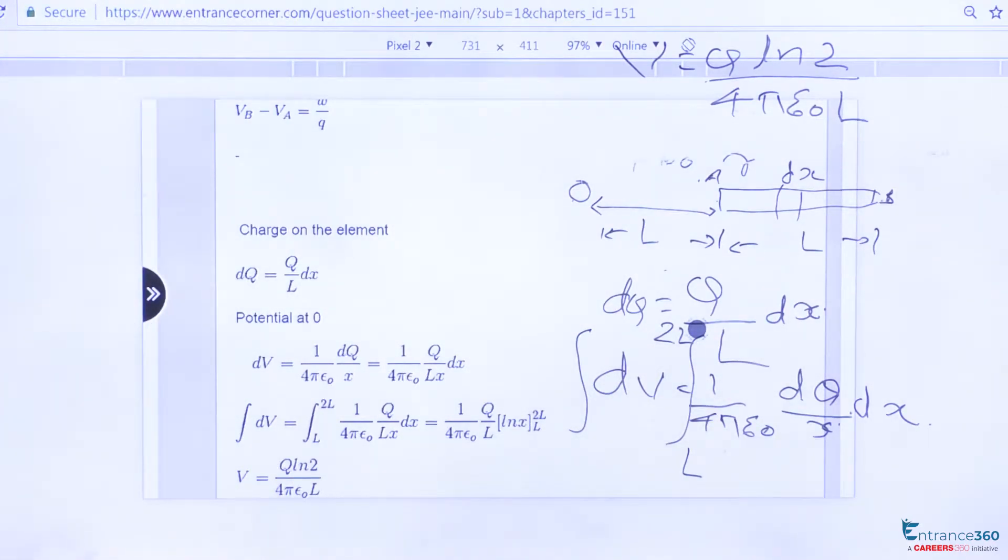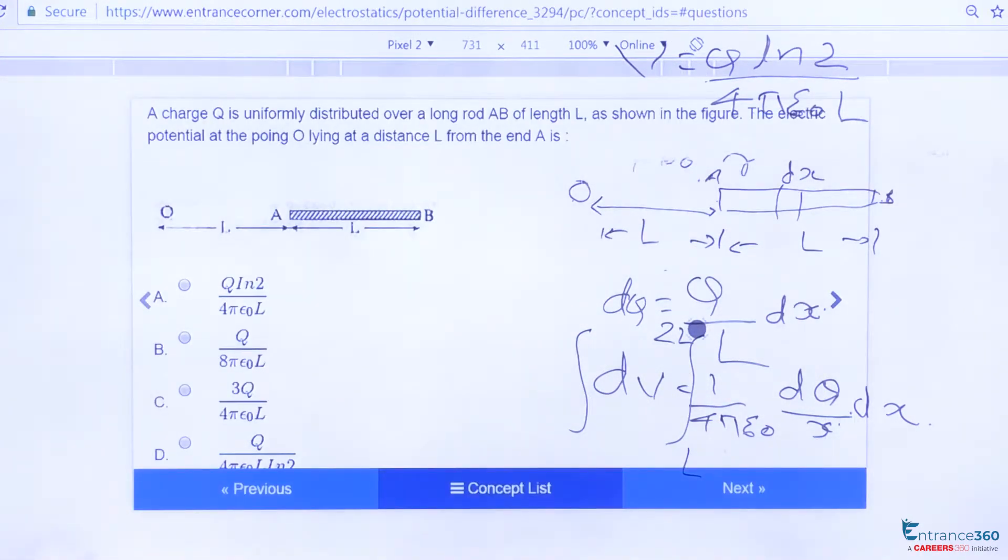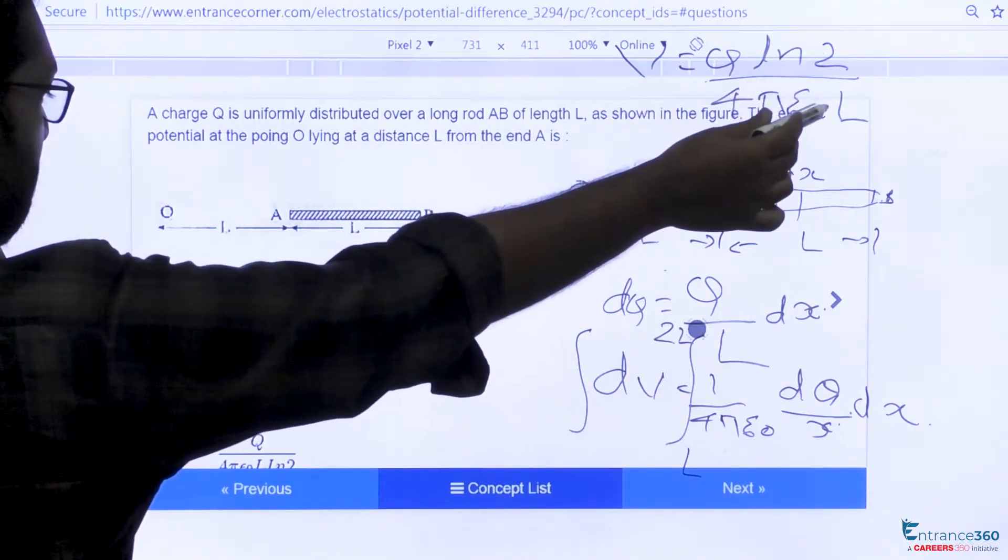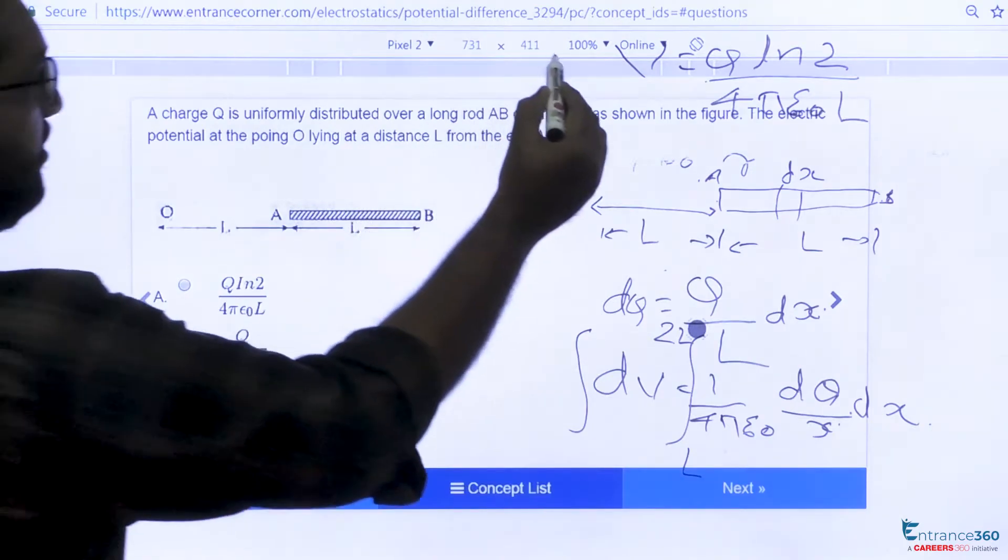So let's check our option. V is equal to Q into ln of 2 by 4π epsilon zero L, which is our option A. So correct answer is A.